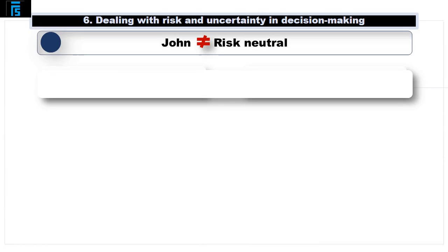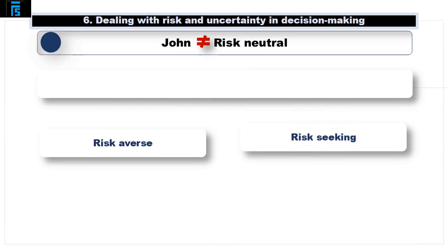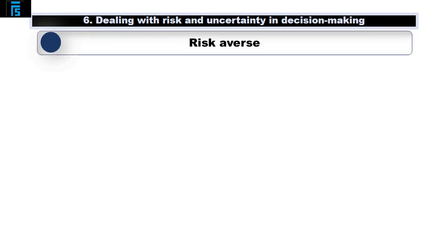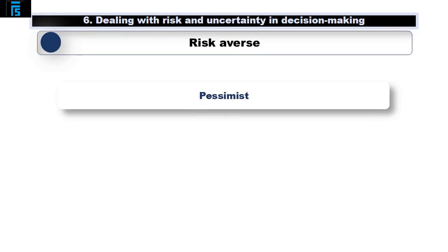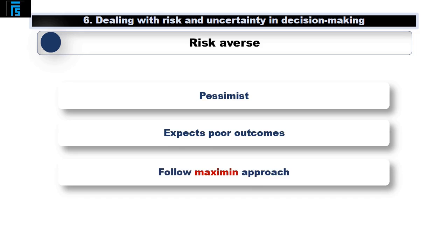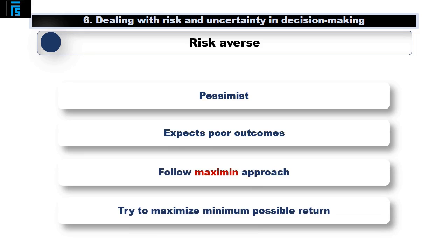Jack, however, may not be risk neutral. He could be risk averse or risk seeking. A risk averse decision maker is in essence a pessimist and assumes that poor outcomes will occur following their decision. They therefore make the decision that will make that poor outcome the best it can possibly be. This is known as the Maximin approach — maximising the minimum possible return.